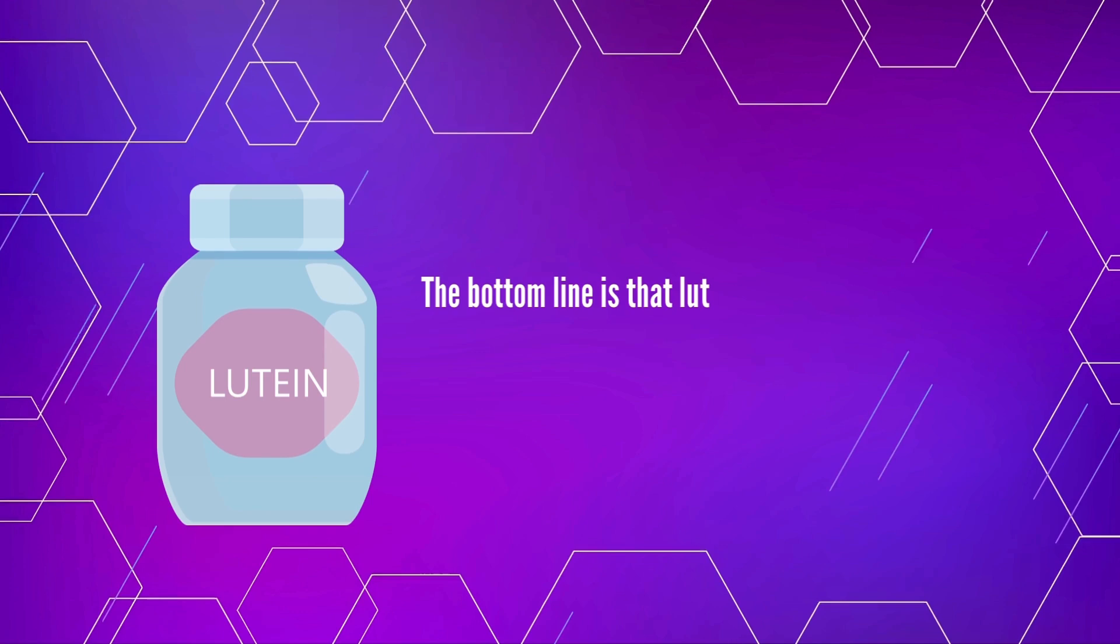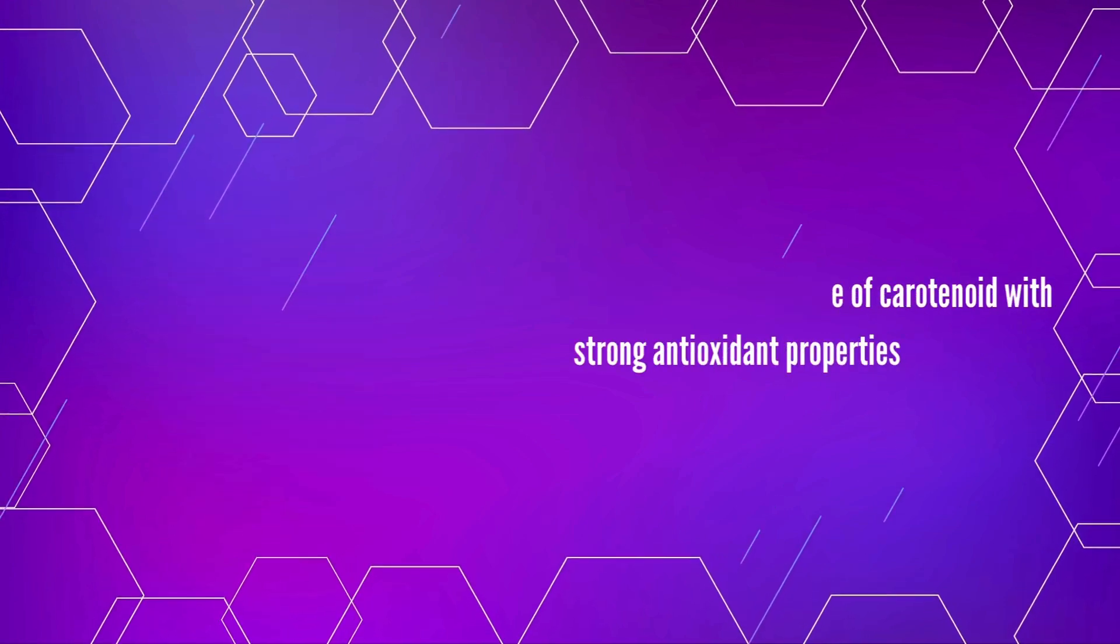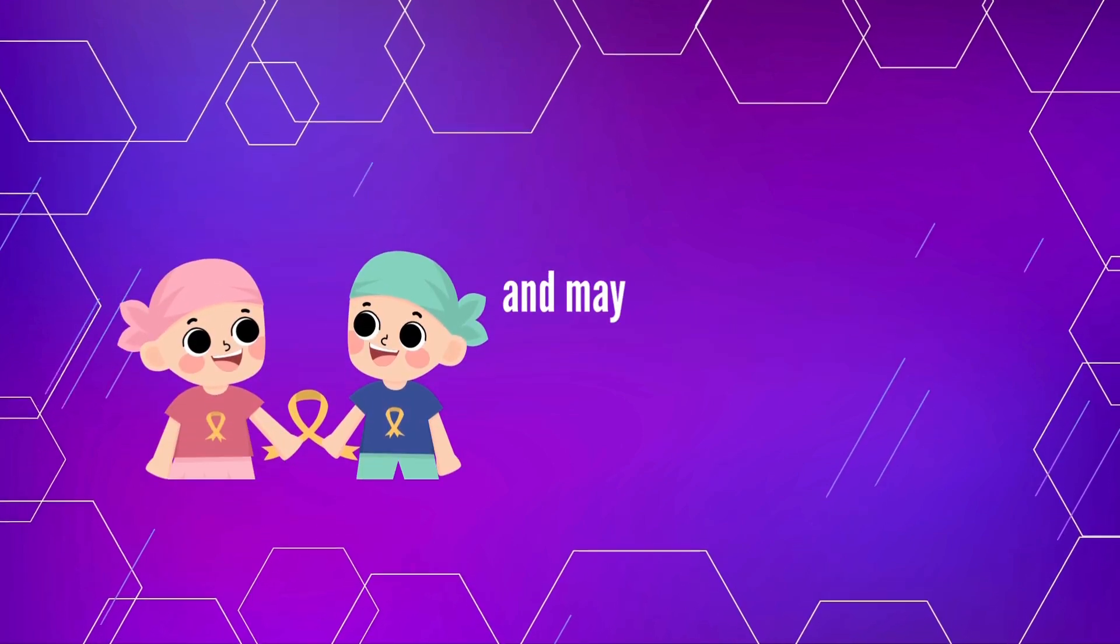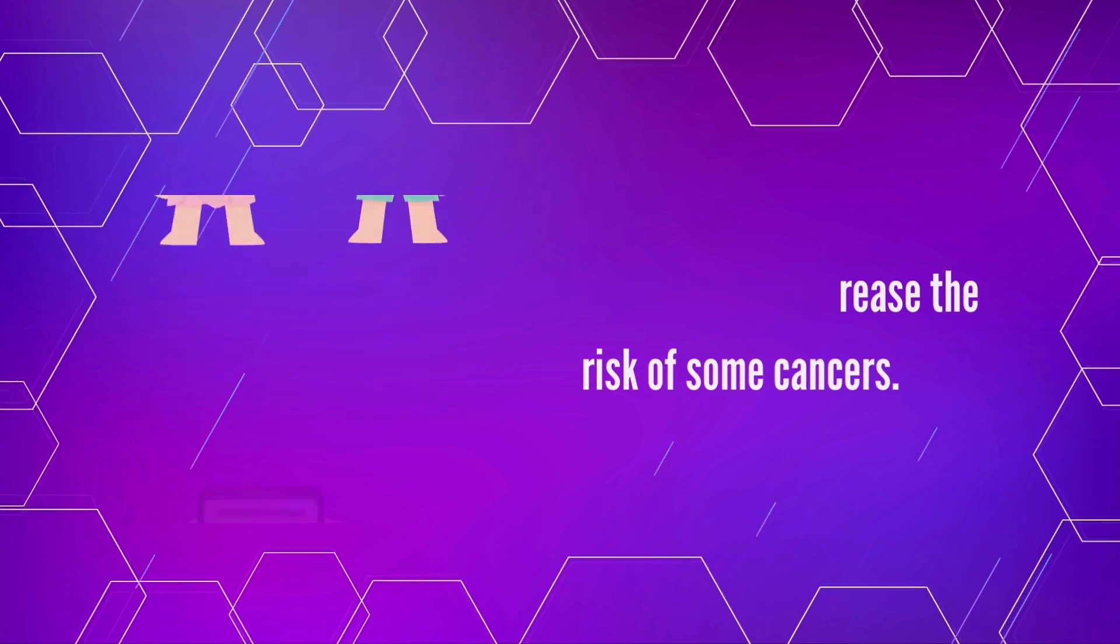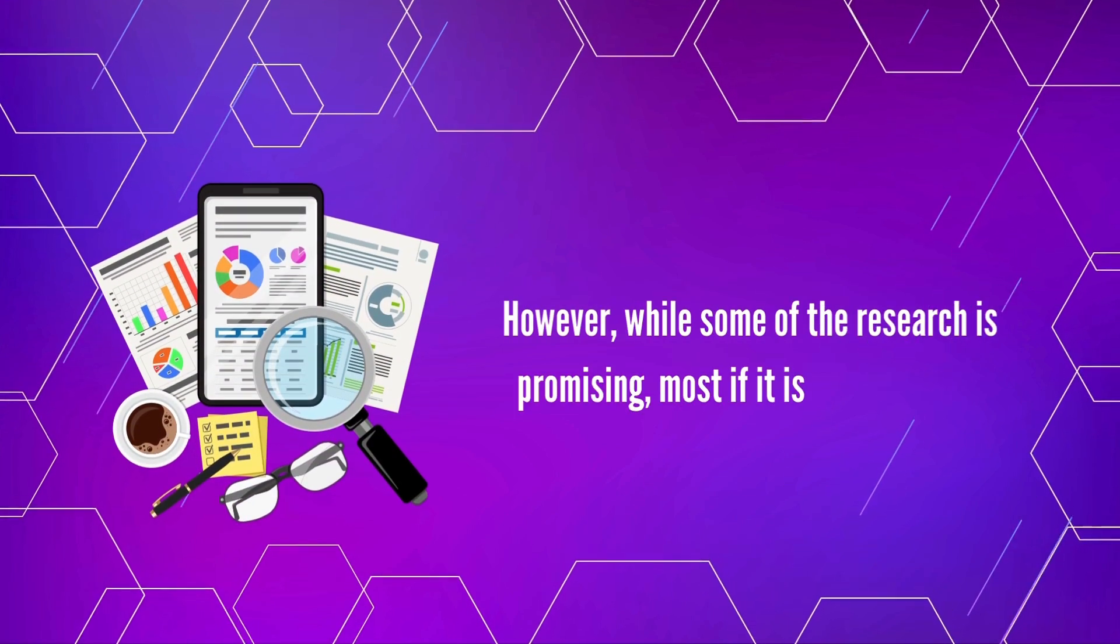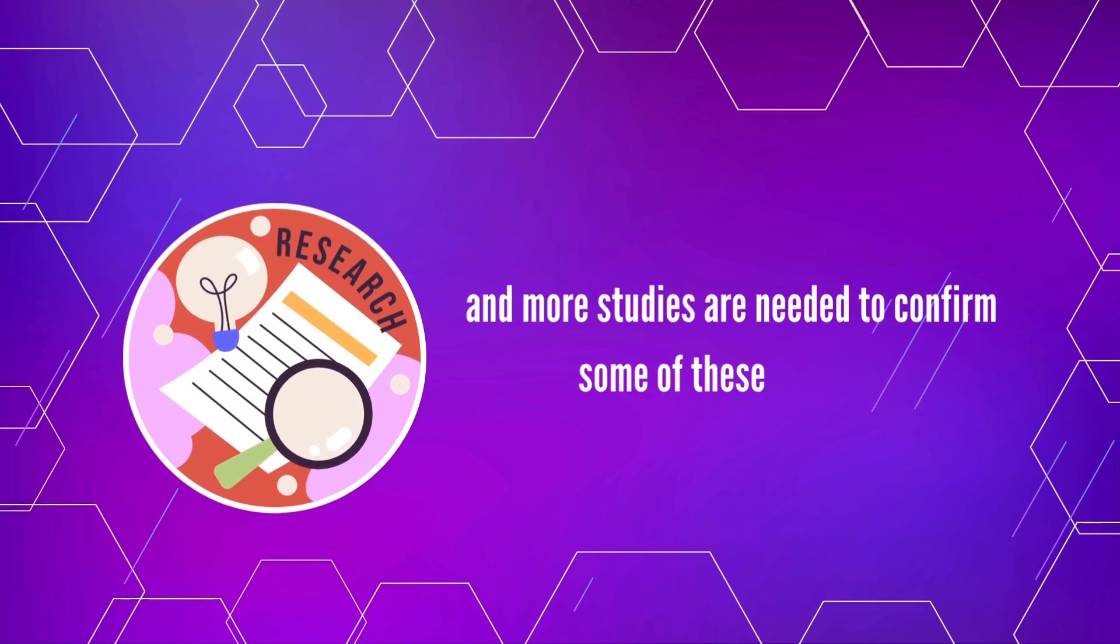The bottom line is that lutein is a type of carotenoid with strong antioxidant properties that have been shown to be beneficial for eye health, cognitive function, and heart health, and may even help decrease the risk of some cancers. However, while some of the research is promising, most of it is not definitive and more studies are needed to confirm some of these benefits.